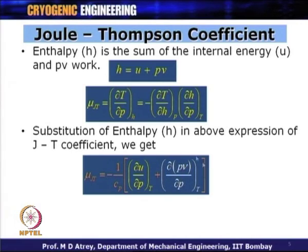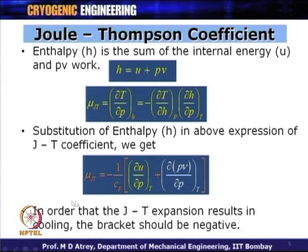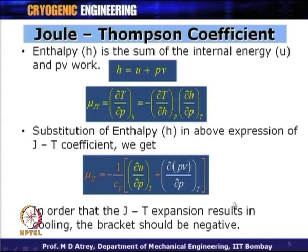This bracket will decide whether mu_JT is positive — which is required for cooling — negative — which results in heating — or zero, which results in no temperature change. In order for JT expansion to result in cooling, the bracket should always be negative, so that taking care of this negative sign, the whole expression becomes positive and mu_JT is positive.